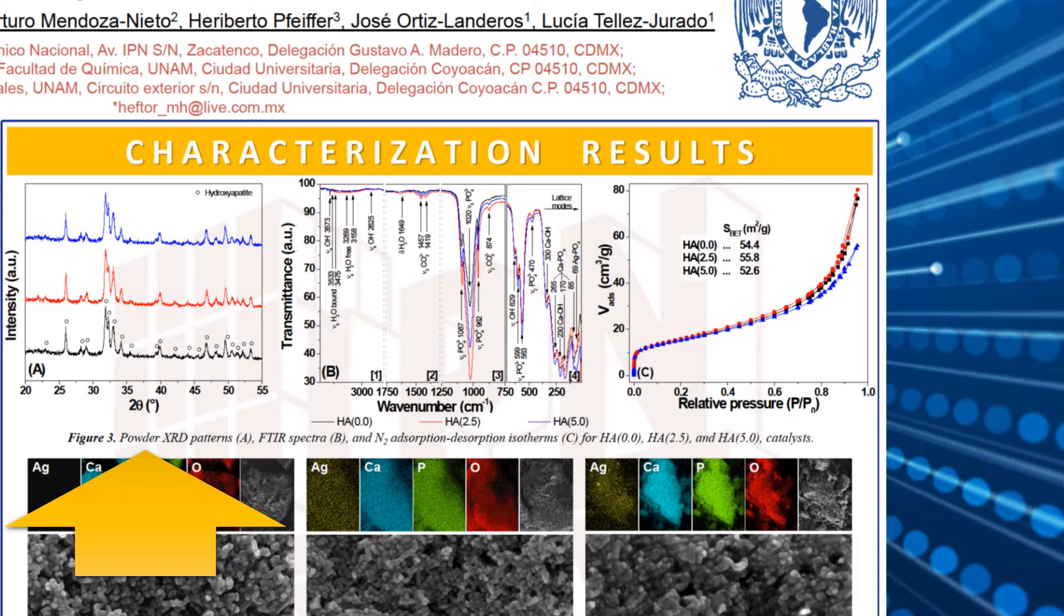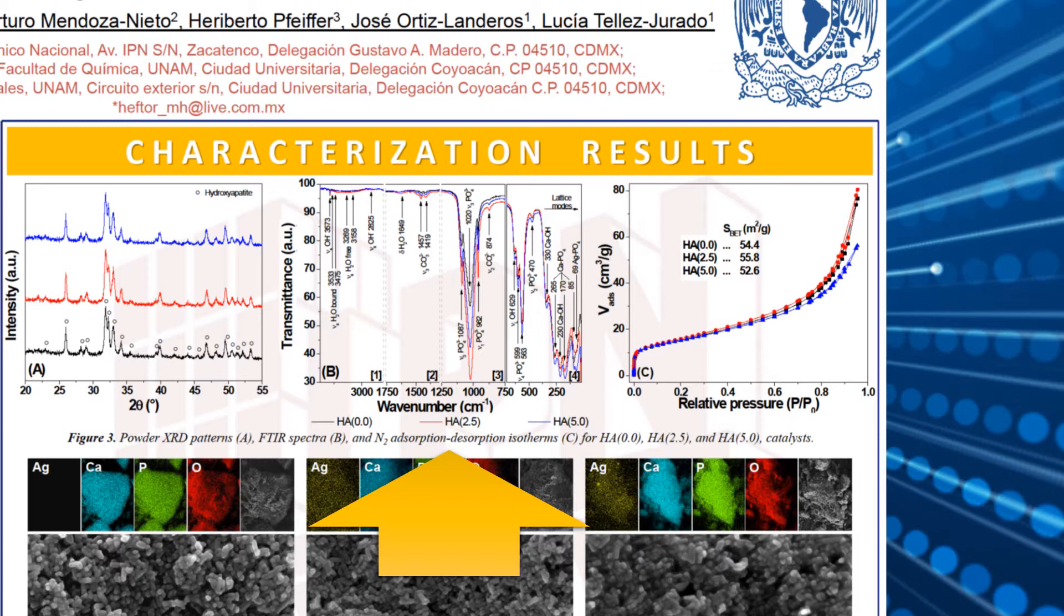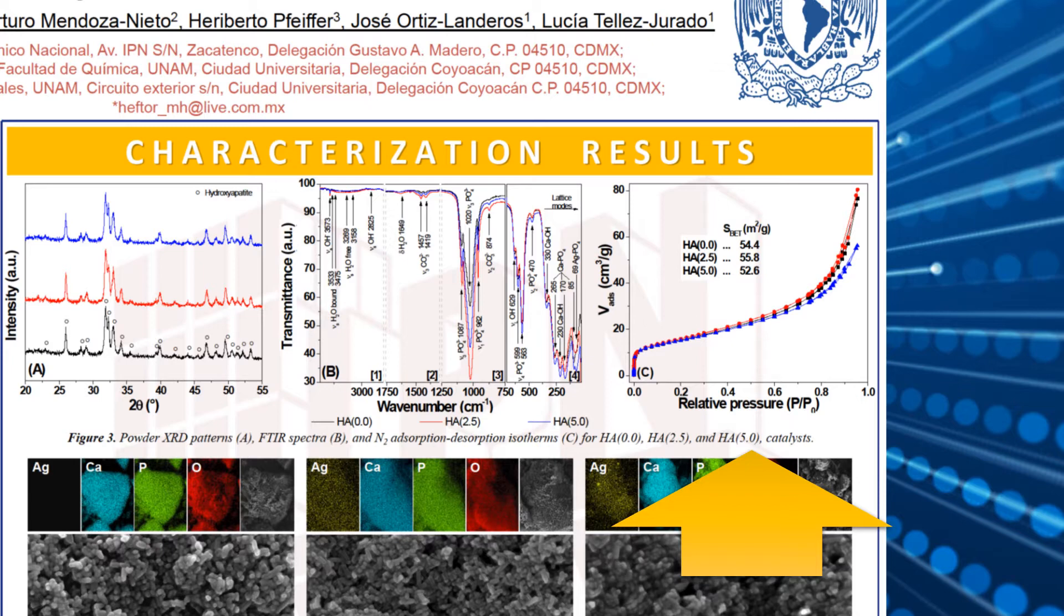The infrared spectra of the materials are presented in Figure 3b, and the characteristic vibration bands for the hydroxyapatite were found. The nitrogen adsorption-desorption isotherms are shown in Figure 3c. The specific surface area was around 50 square meters per gram in the material.